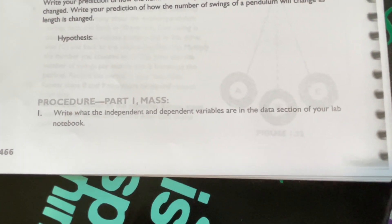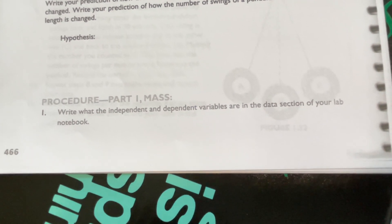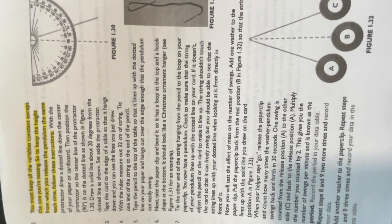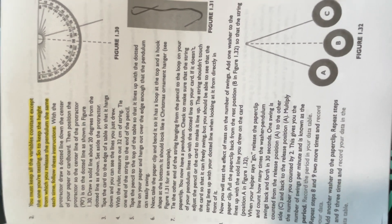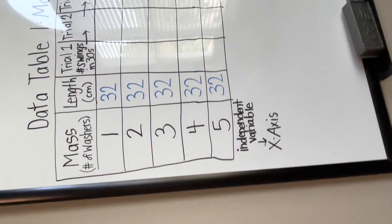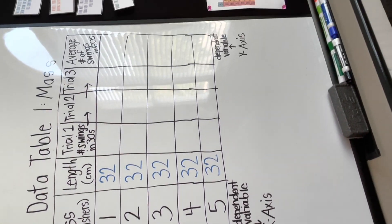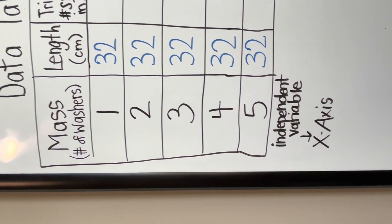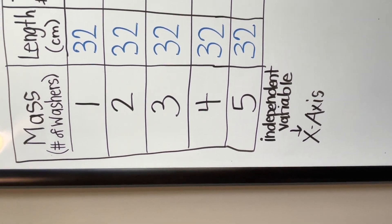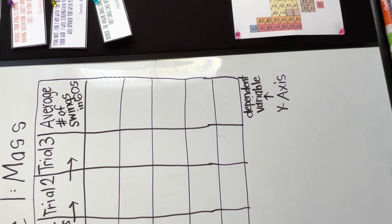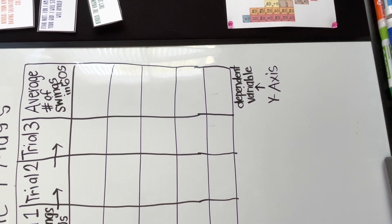Alright, let's get started. Procedure part one: mass. Write what the independent and dependent variables are in the data section of your lab notebook. We have to decide which variables to keep constant and which one we're testing. I've written down the data table for mass. The independent variable is the mass — the number of washers we're adding to the string.